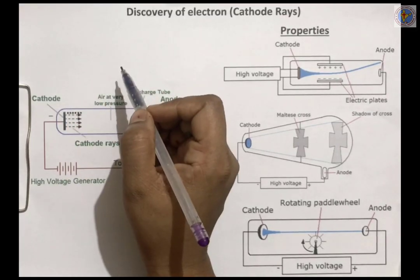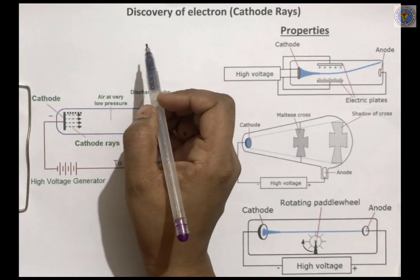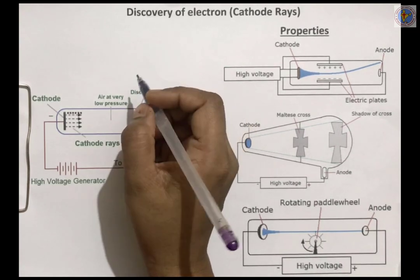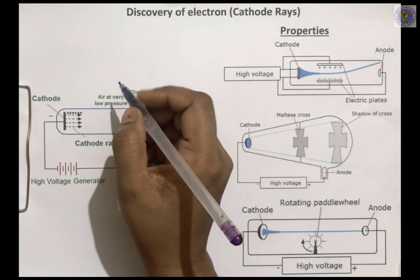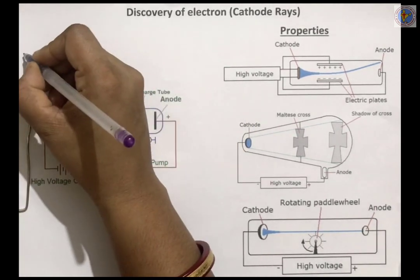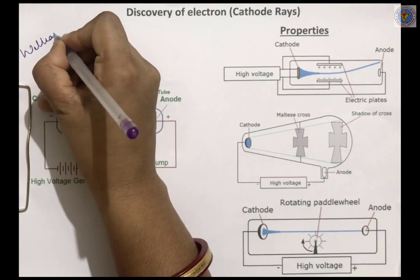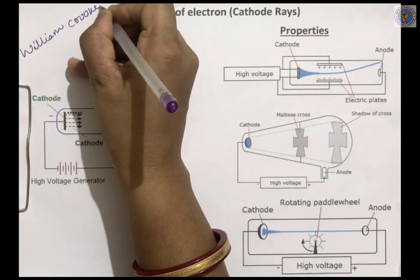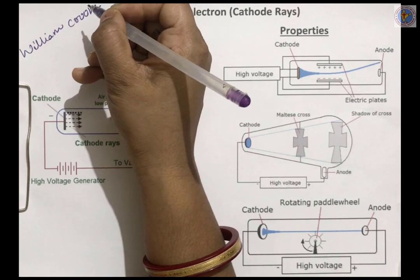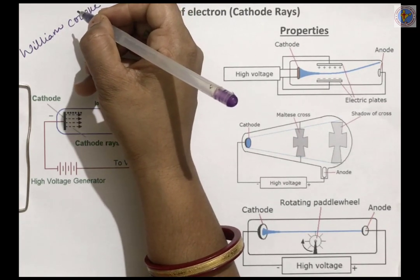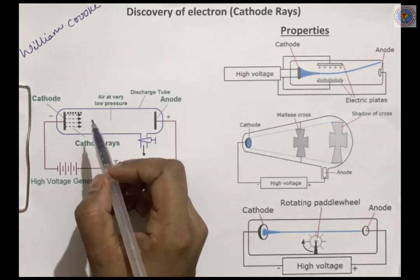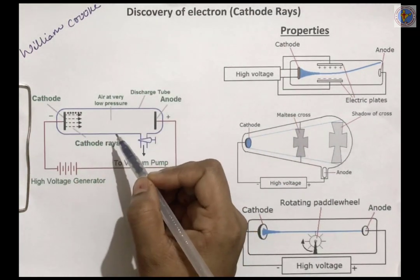Let us start today's session with the topic: discovery of electron. Who discovered electron? William Crooks — a British scientist who discovered the electron. He performed an experiment, and what was the experiment? He took one discharge tube.